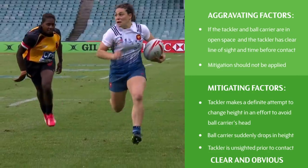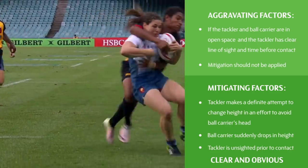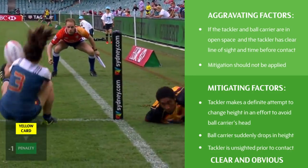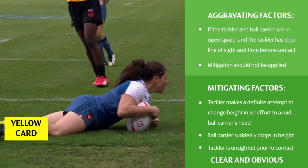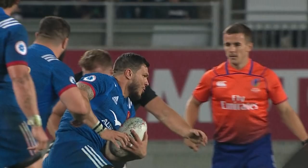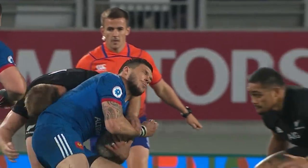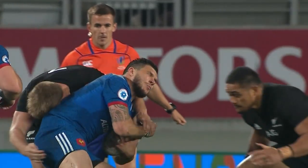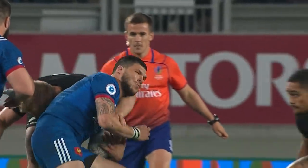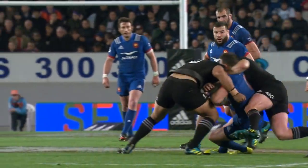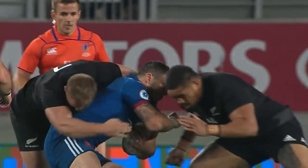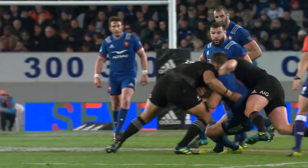In another case, the players are in open space, the tackler has a clear line of sight and time before contact, and so aggravating factors exist — no mitigation should be applied and the decision remains at a yellow card. Let's look at a sequence showing two tackles: the first is a high tackle because the arm of the tackler is in front of his body at contact and makes contact with the ball carrier's head. The second tackle is a shoulder charge because the tackler's right arm on the contact side is behind his body at the moment of contact with the ball carrier.